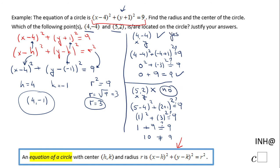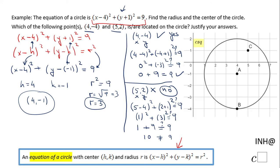And that is the justification. You can see the graph of this circle right here. And you see this is the center at 4 and negative 1. You can see this radius of 3. And also you can notice this is point 4 and negative 4 that is on the circle. And this is point 5 and 2 which is not.